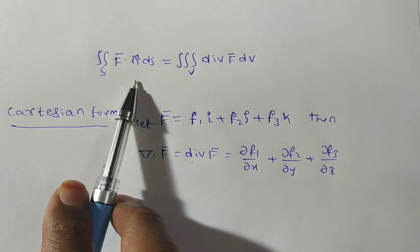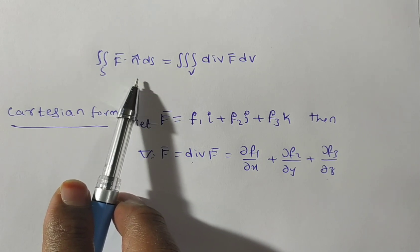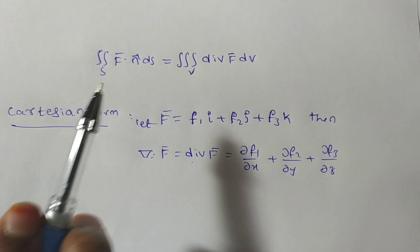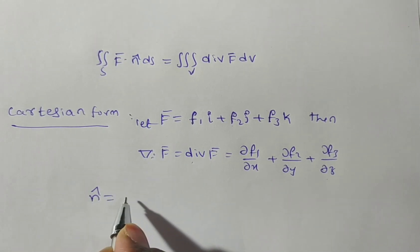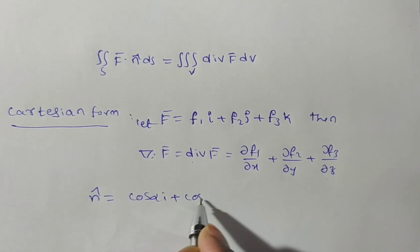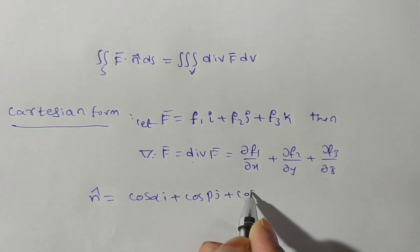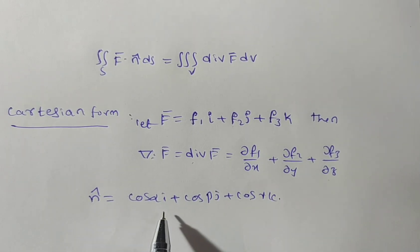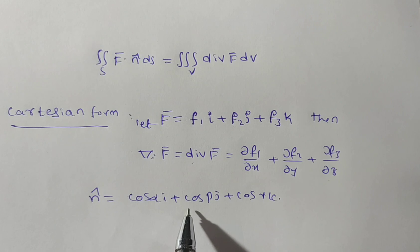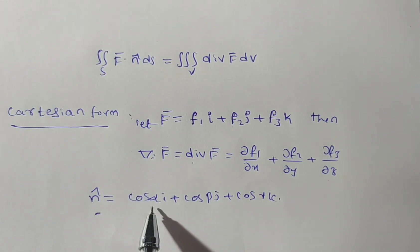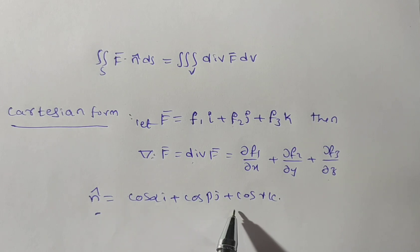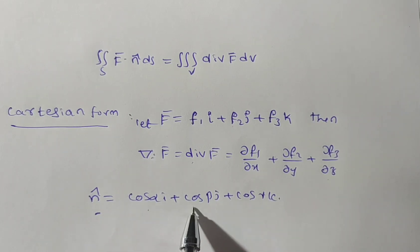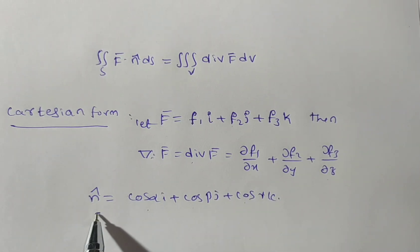On the left-hand side we have n-bar, the outward unit normal vector. We can write n-cap as cos-alpha i plus cos-beta j plus cos-gamma k, where alpha, beta, gamma are the angles which the outward drawn unit normal vector n-bar makes with the positive directions along the x, y, z axes respectively. So cos-alpha, cos-beta, cos-gamma are the direction cosines of n-bar.